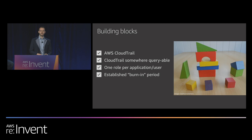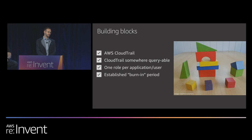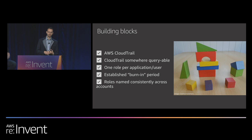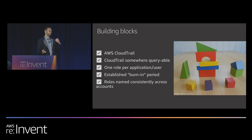You need an established burn-in period. When an application spins up, everything's anomalous — it's never happened before. The last thing we'd ever want is to blow up the security team with alerts that the entire application is anomalous. At Netflix it's 90 days, but it could be whatever you think is normal. We're going to observe the application but not send any alerts during burn-in. After the period expires, we consider that we know what normal behavior is and can start alerting on deviations. We also want roles consistently named across accounts so we can correlate behavior — if you name roles consistently, the same behavior from Foo in test is considered normal for prod.